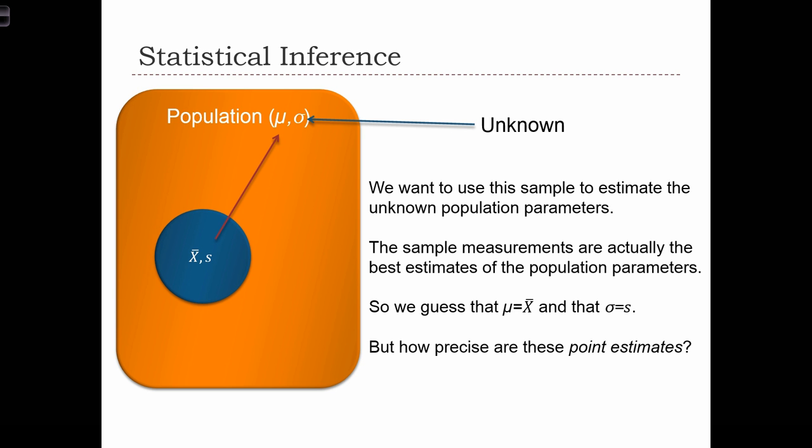So in inferential statistics, what we do is we collect a sample from the population, this blue circle, and for that sample, we calculate the sample mean, x bar, and the sample standard deviation, s. And theory tells us that our best guess for what mu is, is that mu is equal to x bar. And our best guess for what sigma is, is that sigma is equal to s. We are going to call x bar and s point estimators of these population parameters, mu and sigma.